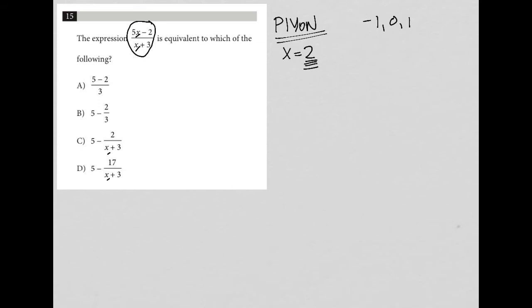Let's see what happens when I plug in my own number into the expression. Instead of 5x, I'd have 5 times 2 minus 2. And instead of x plus 3, I'd have 2 plus 3. What I end up with is 10 minus 2 over 5, which equals 8 over 5.